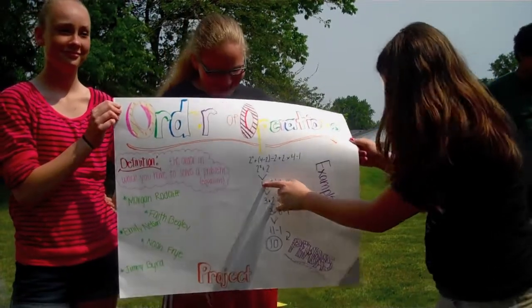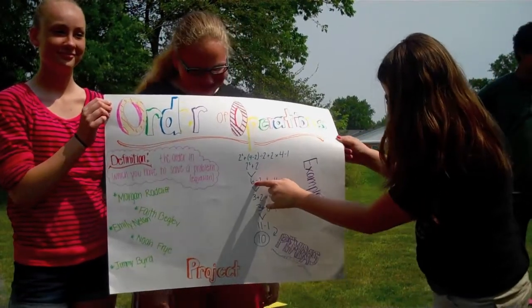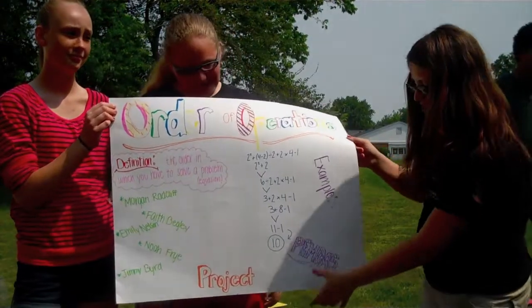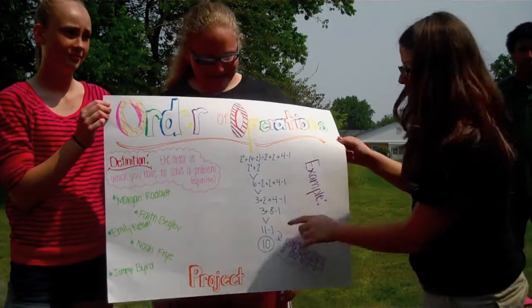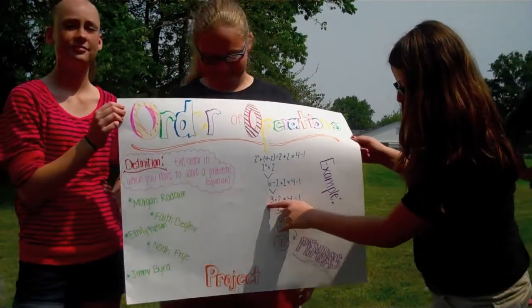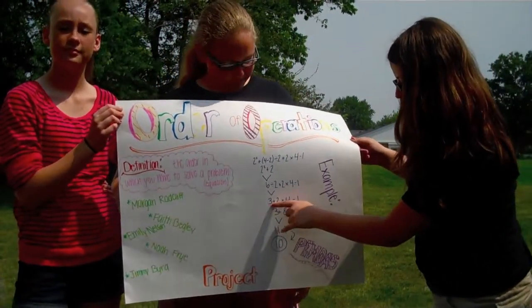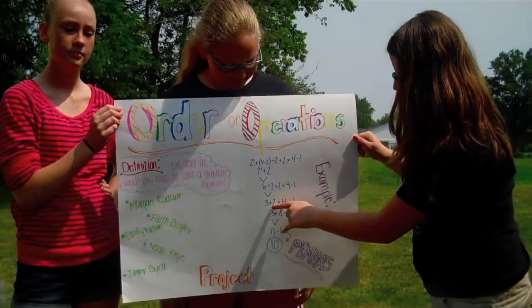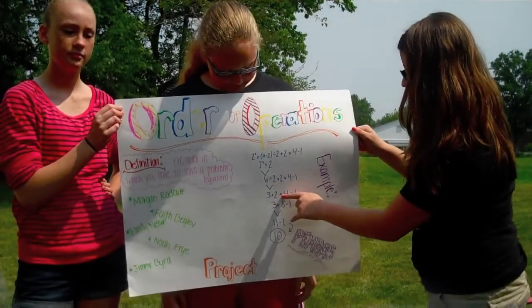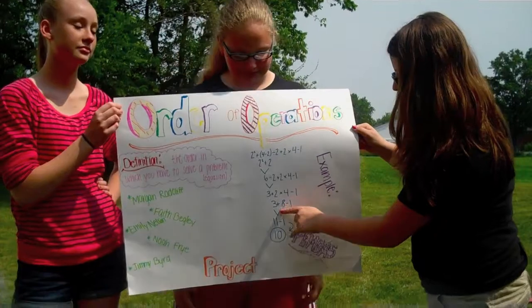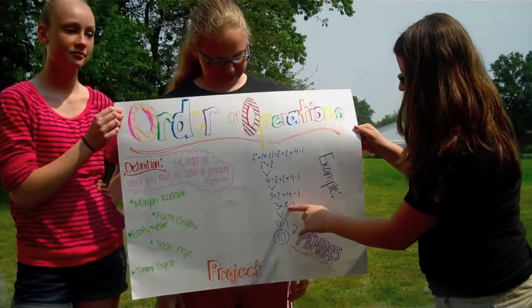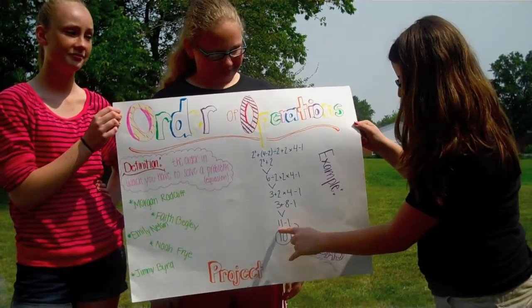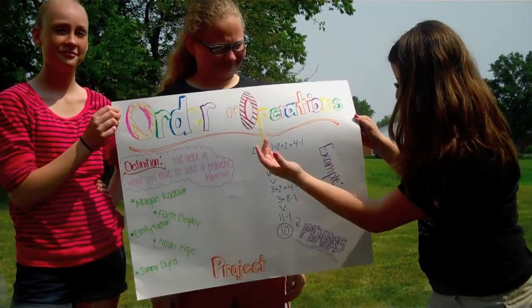6. Then you would do division, because multiplication and division you just do whatever comes first. So divided by 2 is 3, plus 2 times 4 minus 1. You do multiplication which is 2 times 4, which is 8. So 3 plus 8 minus 1. 3 plus 8 is 11, minus 1 is 10!